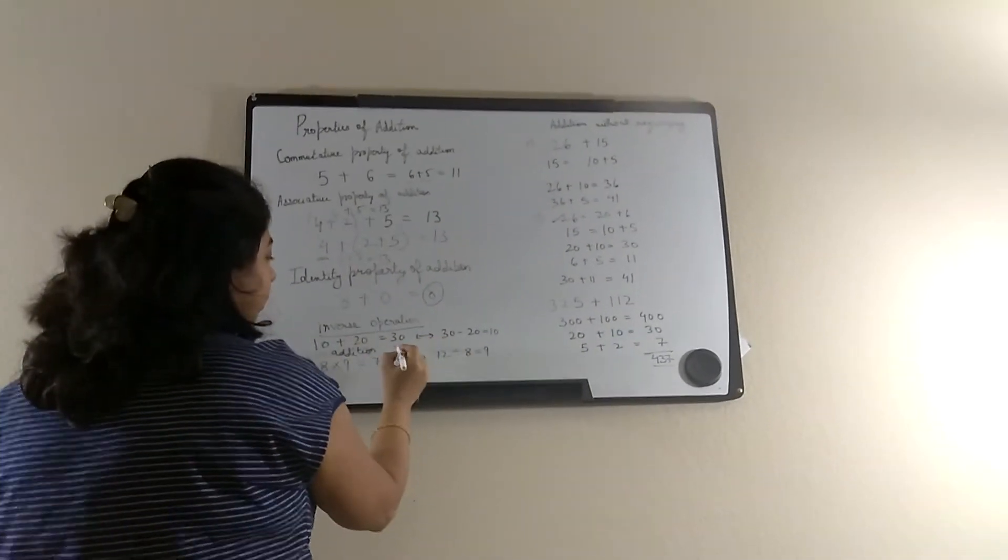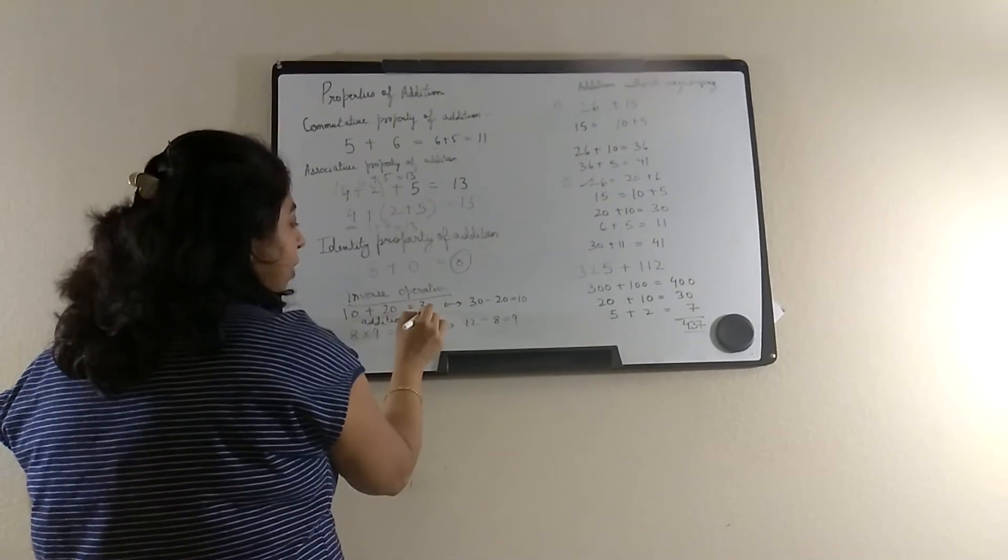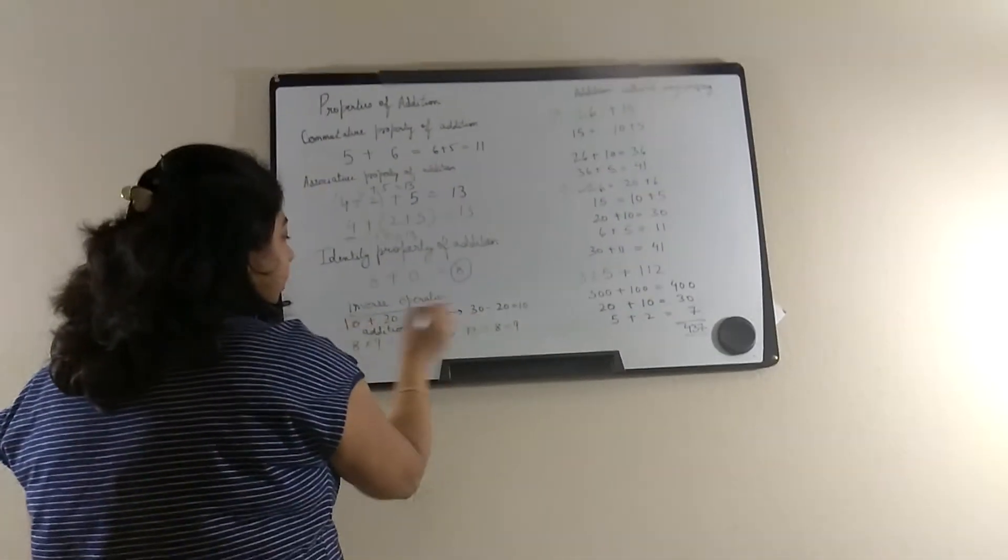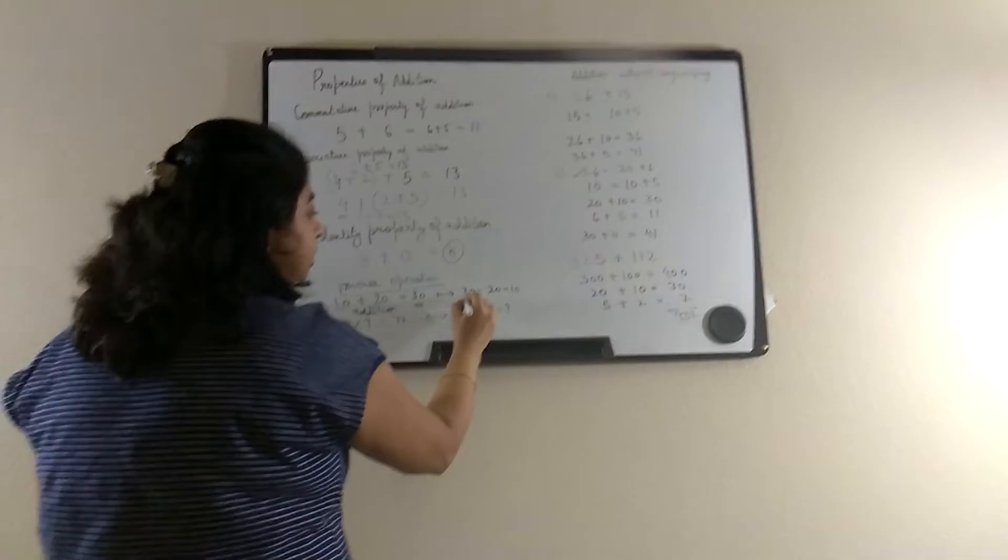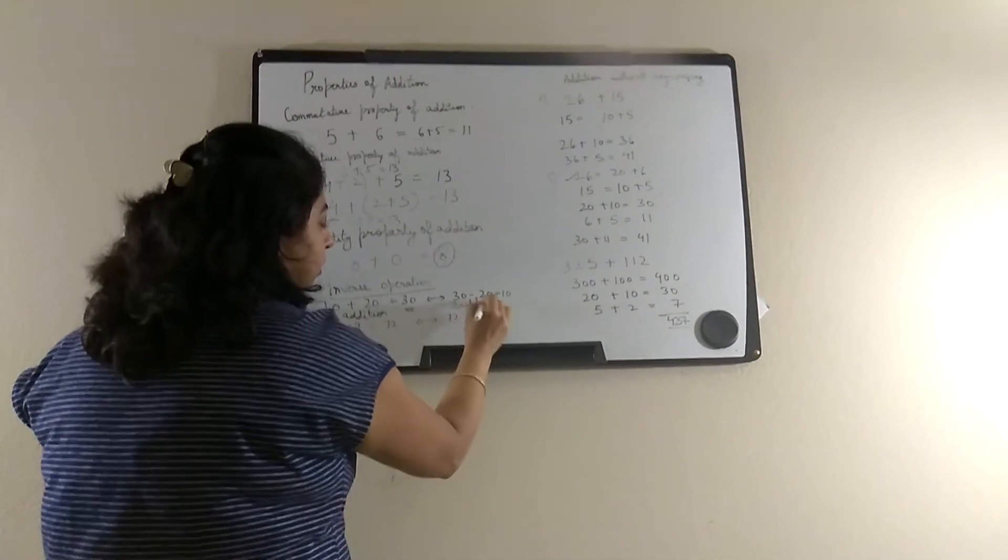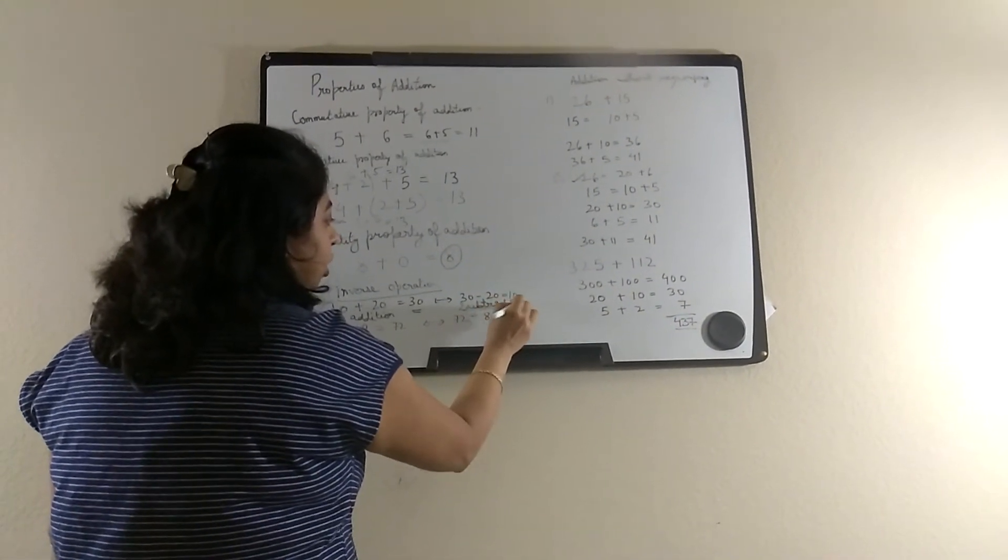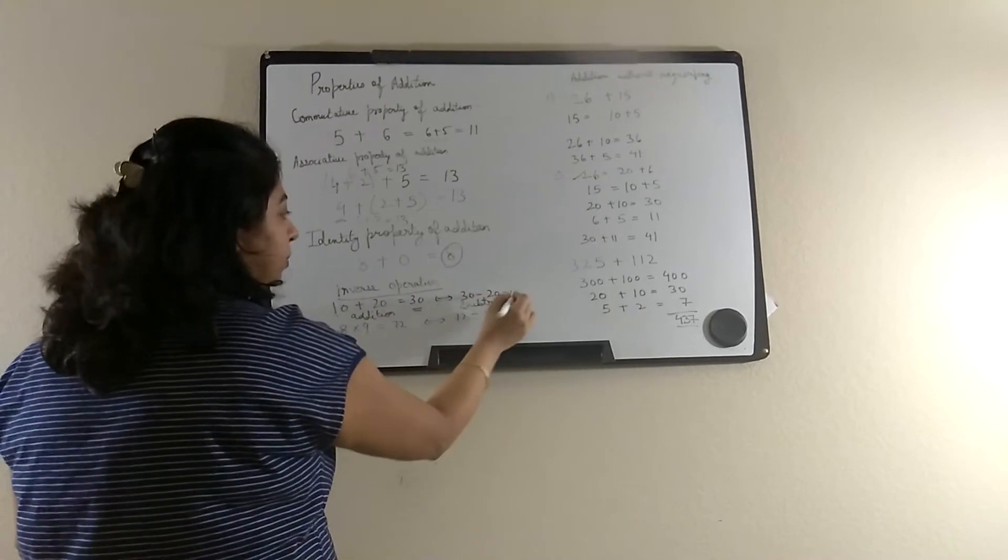And the inverse operation will be if you subtract one number from the product, then you get another number. So that is subtraction. So 30 minus 20 will be 10.